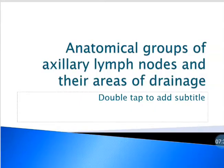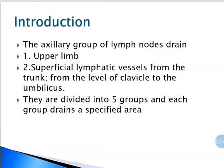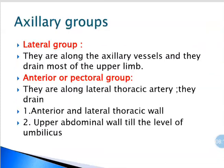Next we go to the anatomical groups of axillary lymph nodes and their areas of drainage. The axillary group of lymph nodes drains the upper limb and the superficial lymphatics from the trunk from the level of the clavicle to the umbilicus. They are divided into five groups, each draining a specific area. The first is the lateral group, located along the axillary vessels, which drains most of the upper limb.